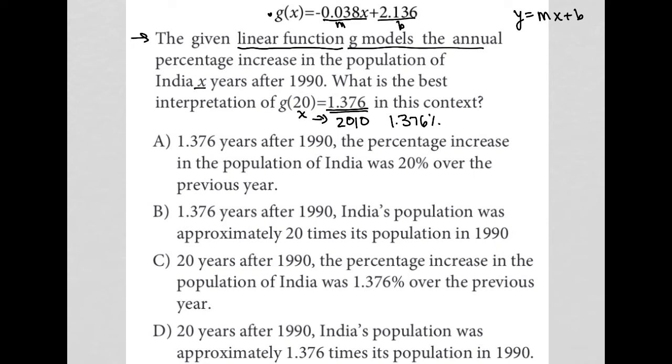I'm just interpreting what the question gave me. It told me that g models an annual percentage increase, so this is what the 1.376% is. And it told me that x represents the years after 1990. So, replacing x with 20 here in the parentheses means that we're now in the year 2010.